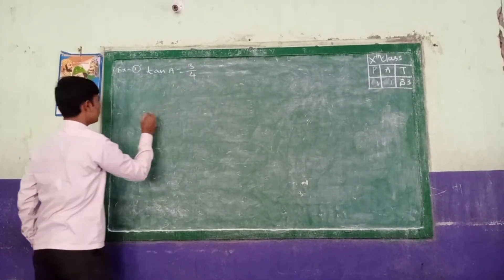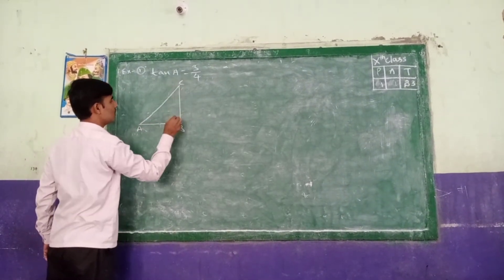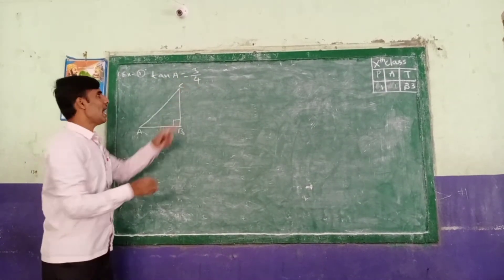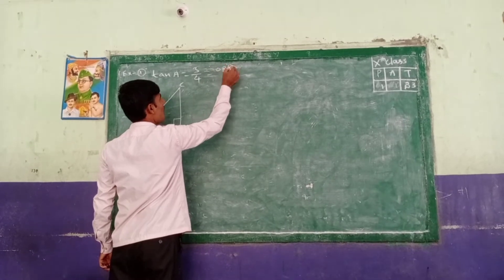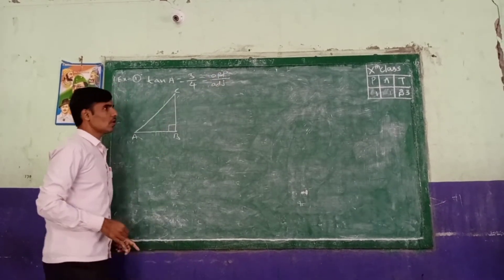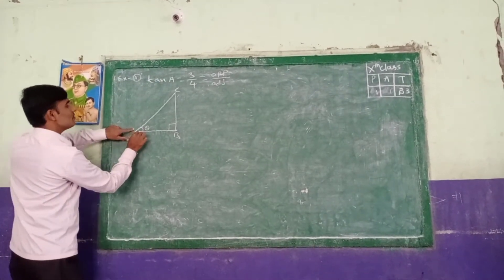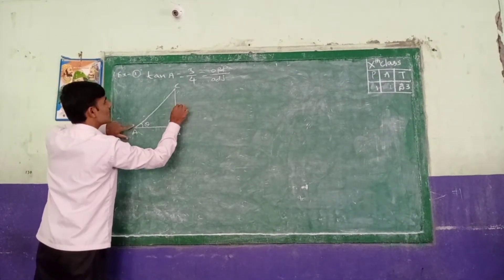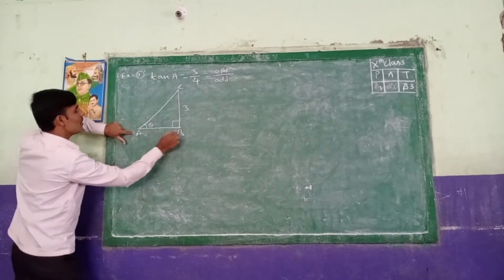Tan A equal to 3 by 4. Here I am taking a right angle triangle A, B, C. Tan A ratio equals opposite side by adjacent side. So for angle A, the opposite side is BC, which we take as 3 units, and the adjacent side AB we take as 4.